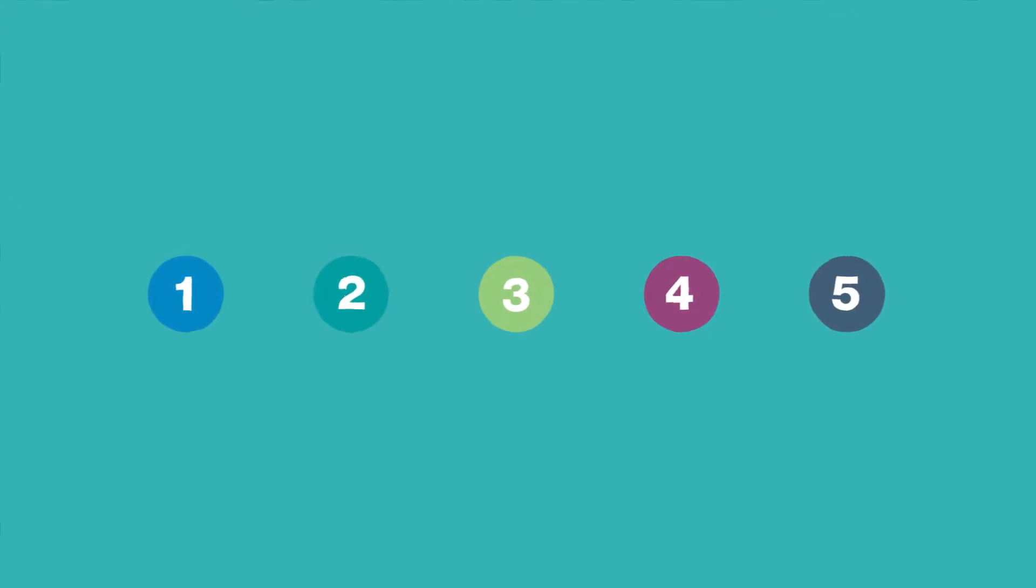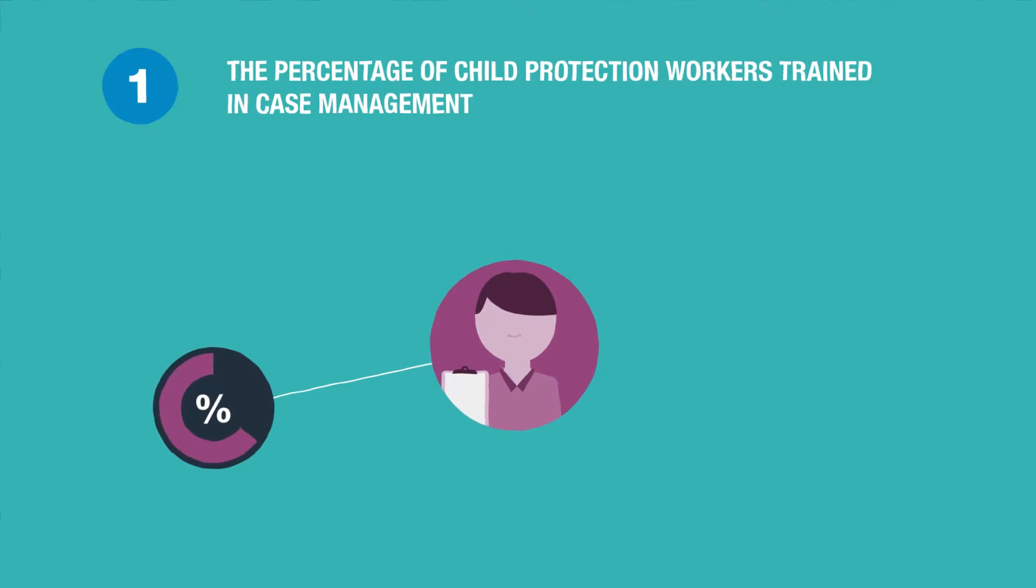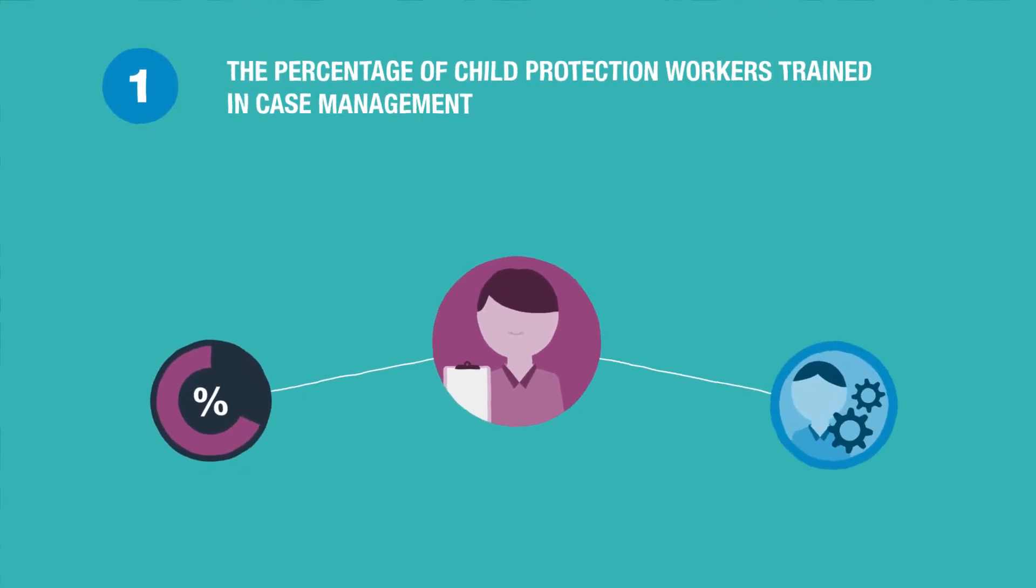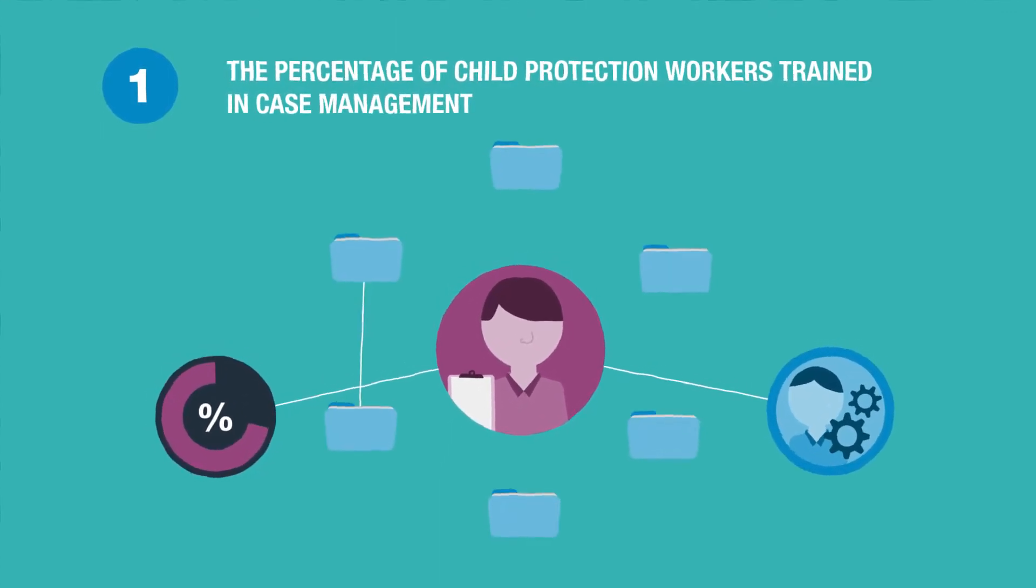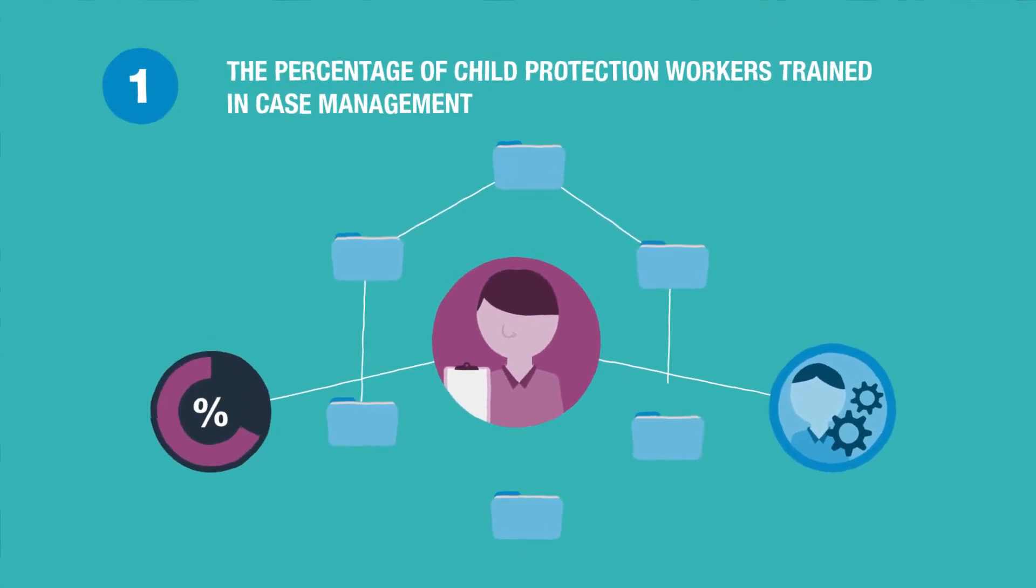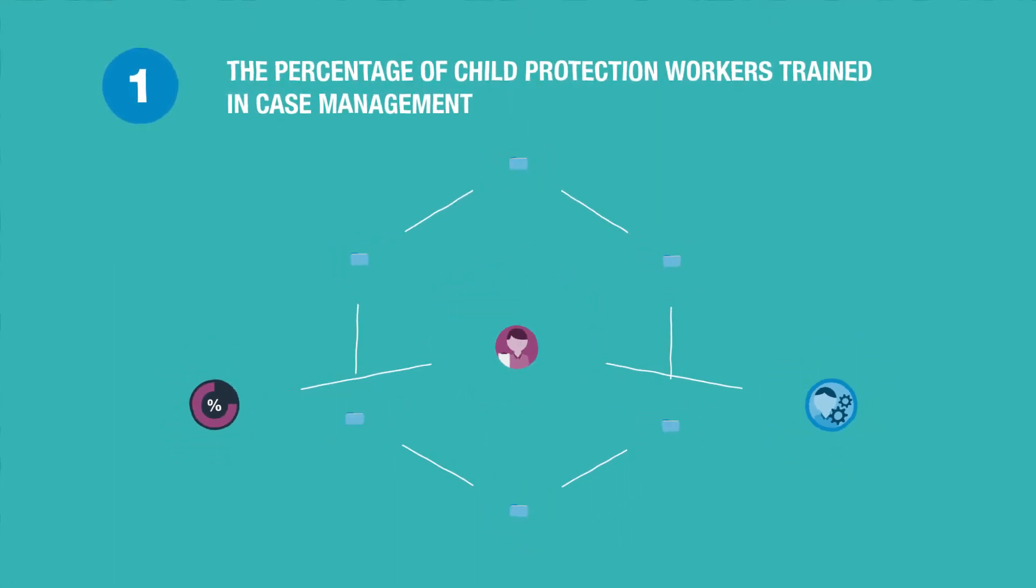The five minimum indicators measure: 1. the percentage of child protection workers trained in case management who demonstrate improved knowledge and competence in applying the case management process.